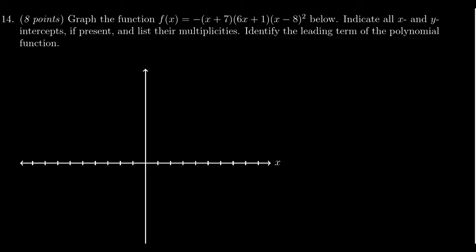We're supposed to indicate all of the x-intercepts and y-intercepts if present. Let's list them. The x-intercepts are going to equal the roots here. So you have -7, you have -1/6, and you have positive 8.